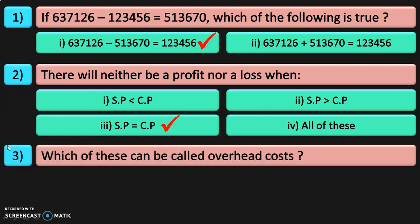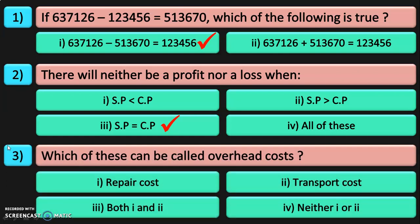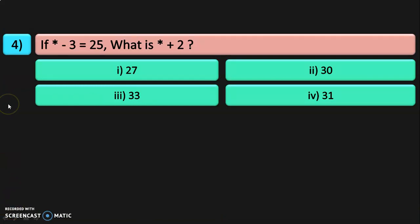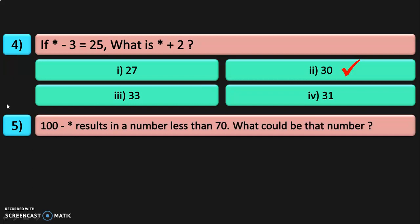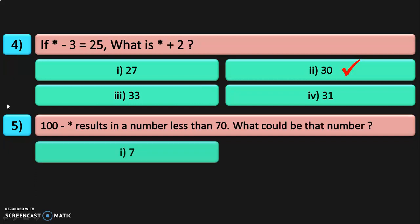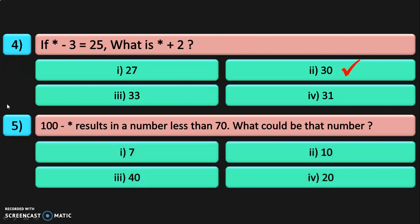Which of these can be called overhead costs? Repair cost, transport cost, both 1 and 2, or neither? Both repair cost and transport cost are overhead costs. Next, if asterisk minus 3 equals 25, what is asterisk plus 2? What number minus 3 gives 25? That is 28. So 28 plus 2 is 30. Next: 100 minus asterisk results in a number less than 70. The options are 7, 10, 40, or 20. The answer is 40, because 100 minus 40 is 60, which is less than 70. The other options do not give an answer less than 70.